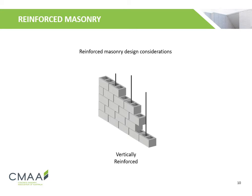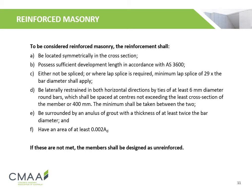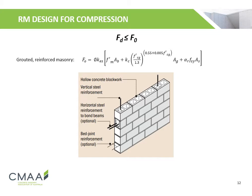Next, we will look at design considerations for reinforced concrete masonry. To be considered as reinforced masonry, the reinforcement shall be located symmetrically in the cross-section, possess sufficient development length in accordance with AS3600 concrete structures, either not be spliced or have a minimum lap splice of 29 times the bar diameter, be laterally restrained in both horizontal directions, be surrounded by an annulus of grout with a thickness of at least twice the bar diameter, and have an area of at least 0.002 times the design area. If these are not met, the members shall be designed as unreinforced.